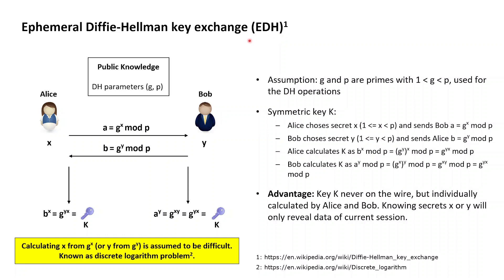An ephemeral Diffie-Hellman key exchange allows Alice and Bob to commonly agree on a symmetric encryption key K without this key K ever being on the wire between Alice and Bob, neither in plain nor encrypted, as it was the case with the hybrid encryption scheme. In order for this to work, it is assumed that Alice and Bob, by following a certain protocol, have agreed on using a set of Diffie-Hellman parameters G and P, which are public knowledge available to everyone.